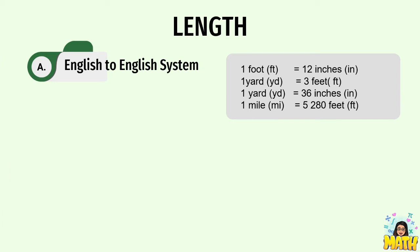Let us focus first on the length. When converting units, it depends on what is given. If we are converting foot, yard, inches, and mile to each other, that is English to English system, wherein 1 foot equals 12 inches, 1 yard equals 3 feet, and since we have 3 feet in a yard — 3 times 12 is 36 — 1 yard means 36 inches. And also, 1 mile equals 5,280 feet.